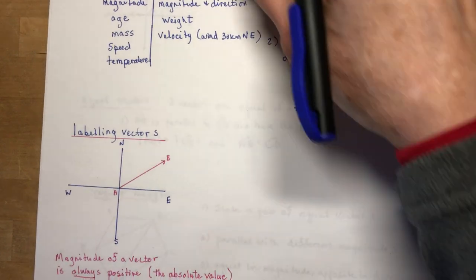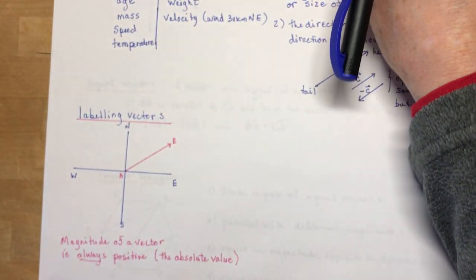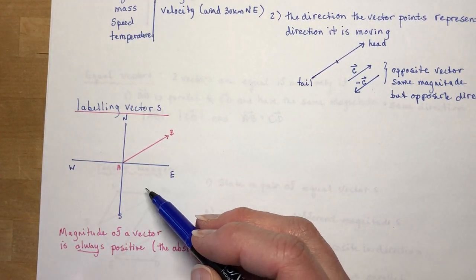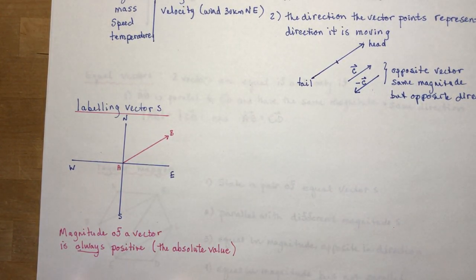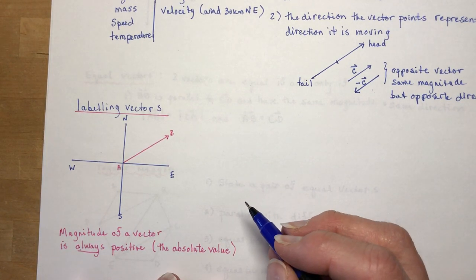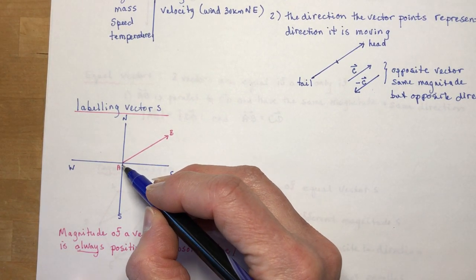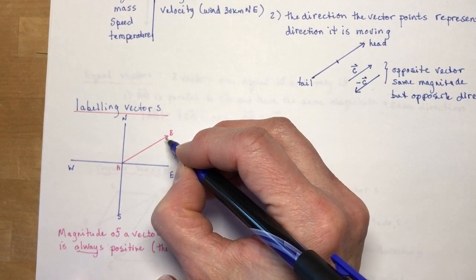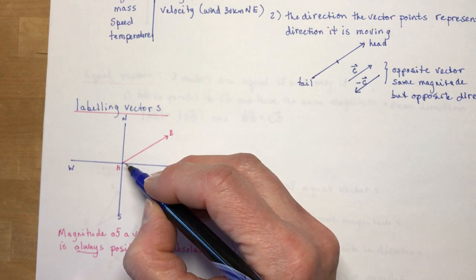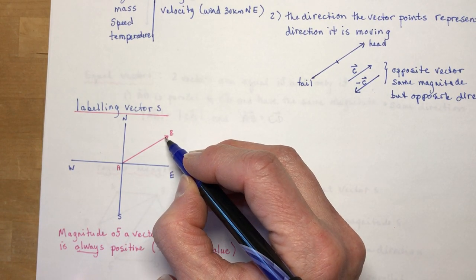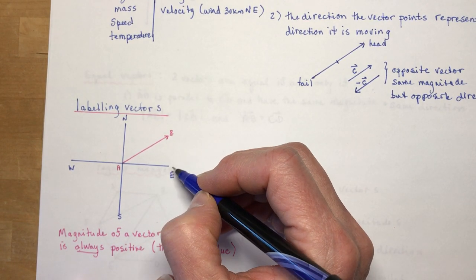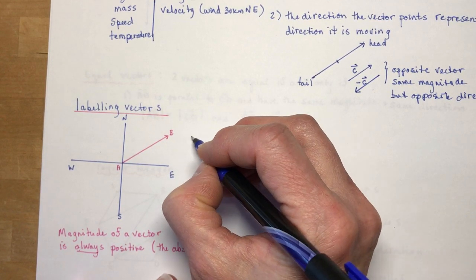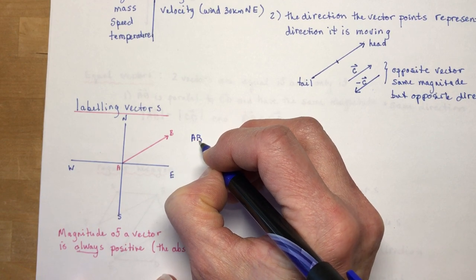So the other thing is how do we label a vector. So if I have vector here, now this isn't a coordinate plane, this is just directions for you, because you have to have a direction to your vector. So if I have this AB from A to B here, this is vector AB because it has an arrow on the end. If I just drew a line here from A to B, it would just be a line segment AB. So as soon as you put an arrow on it, it becomes a vector.